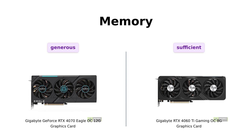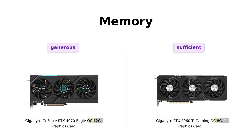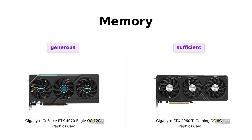Meanwhile, the Gigabyte RTX 4060 T Gaming OC 8G offers 8GB of GDDR6 memory on a 128-bit interface. While it may have a smaller memory capacity, it can still handle most gaming needs.